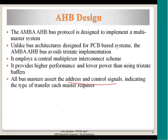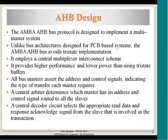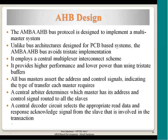All bus masters access address and control signals indicating the type of transfer required. The central arbiter determines which master has its address and control signals routed to all slaves. The control signal communicates whether it is a read or write, the width of the transfer — whether it is a halfword, full word, or byte transfer. A central decoder selects the appropriate read data and response acknowledgement from the slave involved in the transaction, giving the responding data to the master holding the bus grant.